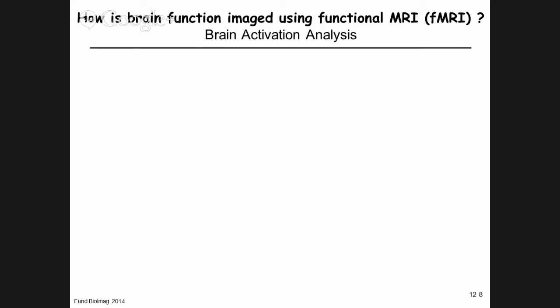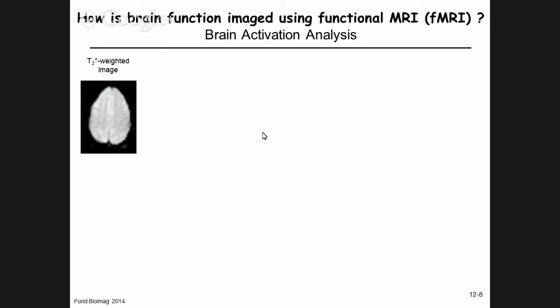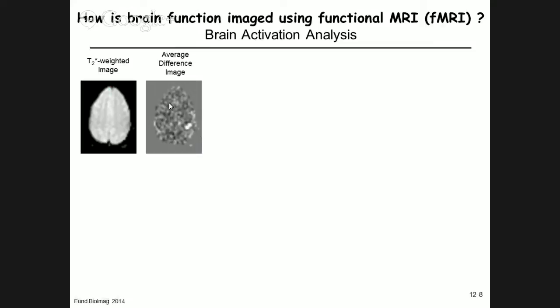We'll cover briefly how activation maps are generated. You start with a T2 star-weighted image and subtract the image acquired during rest from that acquired during a task — looking at light, listening to sound, touch, or moving fingers. This difference image was done nearly 25 years ago in the first fMRI studies in humans to show there was indeed a change in signal.